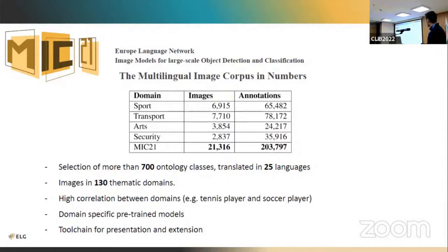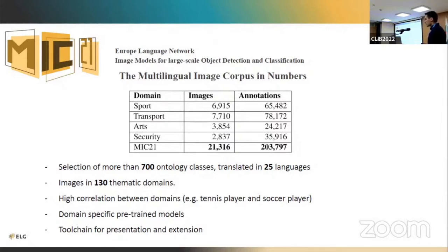We have four main domains: sport, transport, arts, and security. The dataset is not yet fully rich, but with the toolchain we developed using pre-trained models it can be extended. For each of the 130 thematic domains we have a dedicated machine learning model trained for that specific domain, which can assist in further extending the domain with more images.